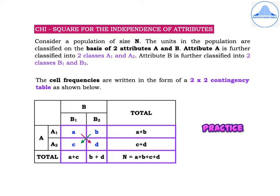An important point to remember: when a 2x2 contingency table is given or formed from the given information, the cell frequencies a, b, c, d should be marked in the same way as shown in this table. Always draw the cross arrows because they will help you remember the formula correctly.